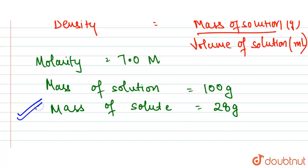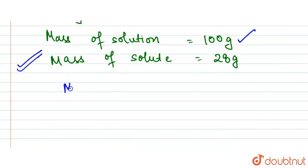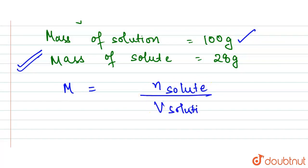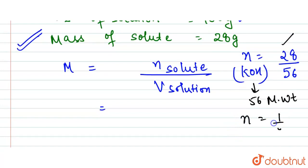From this, we can calculate the moles. We have the mass of solution as 100 grams, but we need the volume. We know that molarity equals moles of solute divided by volume of solution. The number of moles of KOH equals 28 divided by 56 (molecular weight), which gives 0.5 moles.